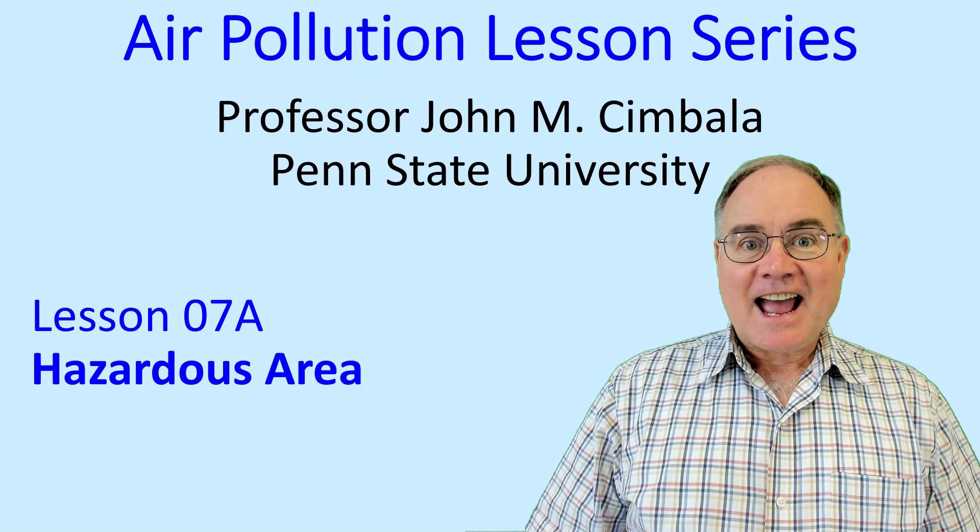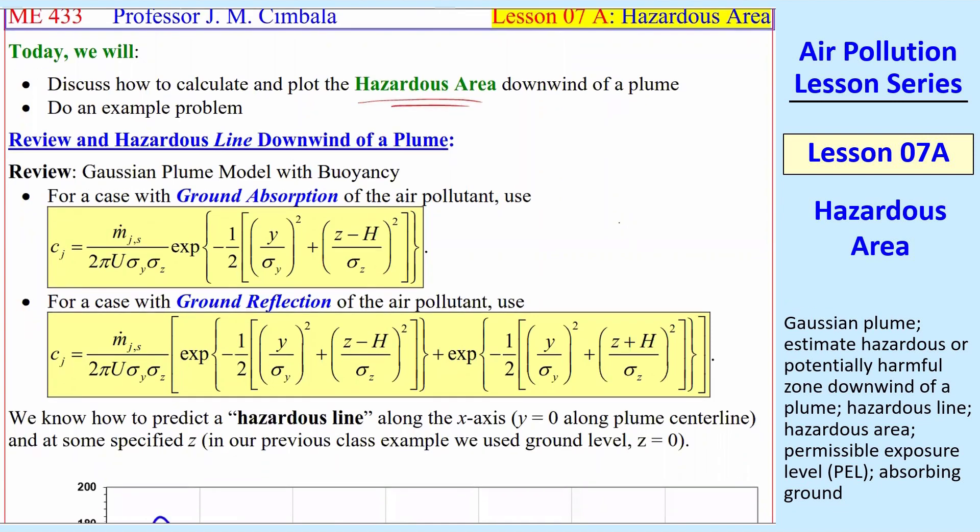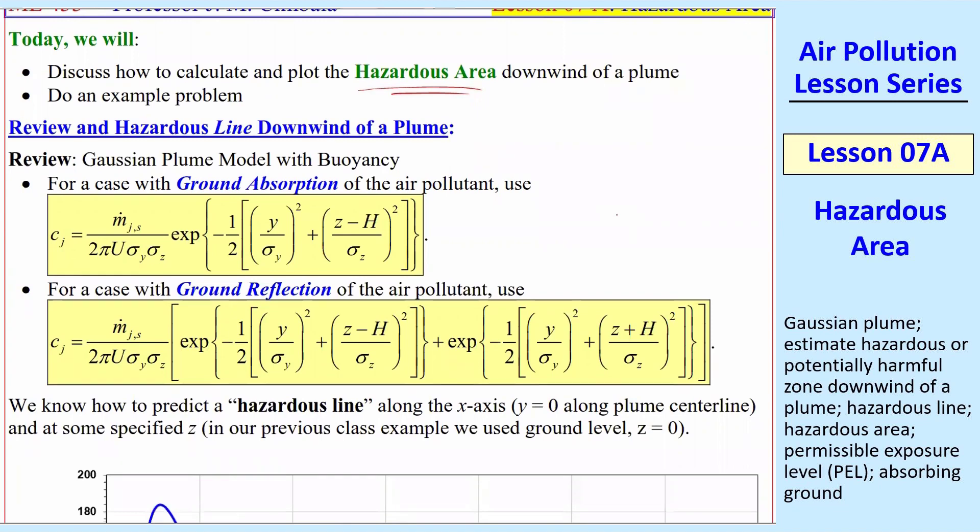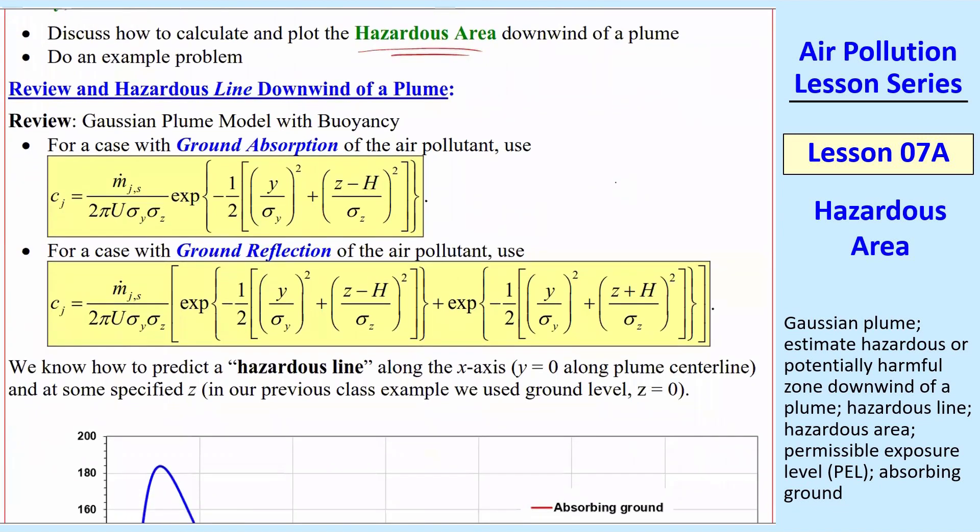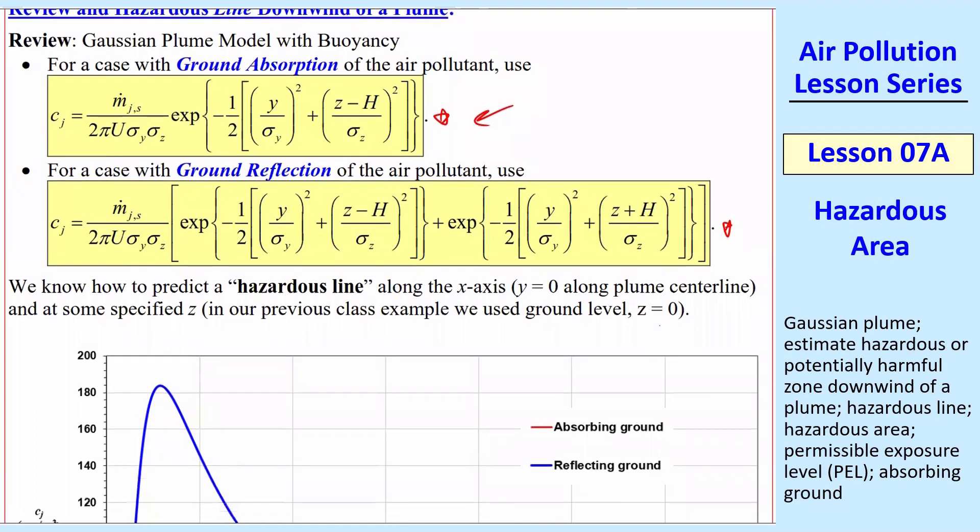Welcome to lesson 7a, hazardous area. I'm going to show you how to plot the hazardous area downwind of a plume. Where will this plume be dangerous to people that live downstream downwind of the plume? So quick review, we can easily do a hazardous line downwind of a plume. Here's our Gaussian plume model with buoyancy for the ground absorption case and for the ground reflecting case. Let's talk about the ground absorption case first in this lesson.